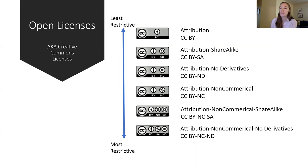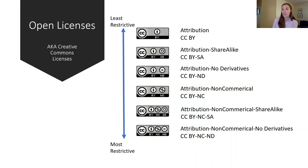For CCBYND — no derivatives — you cannot make changes to the work, but you can retain, reuse, and redistribute it. For CCBYNC — non-commercial — you can make changes to the work as long as you do not sell the resulting work. The last two licenses are combinations of the ones already described.